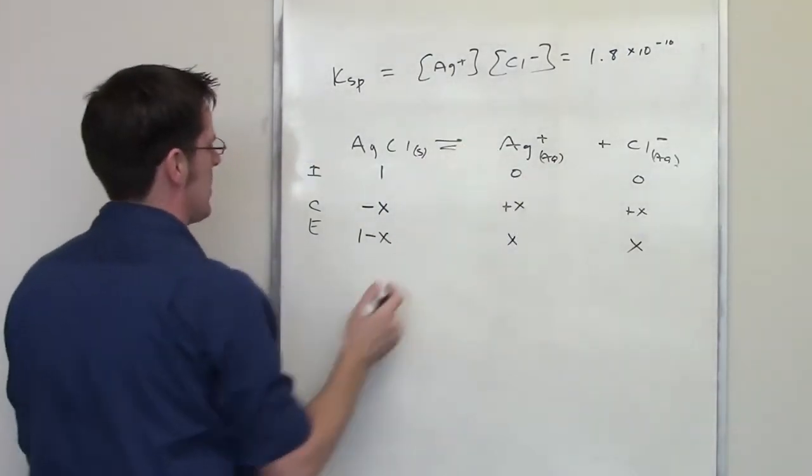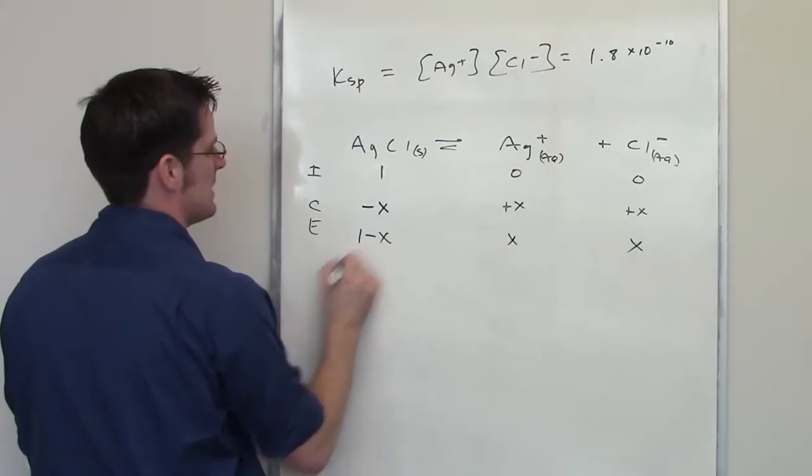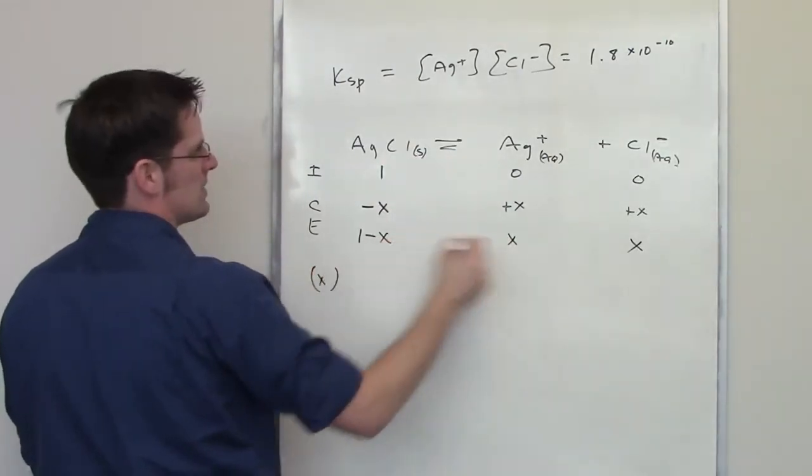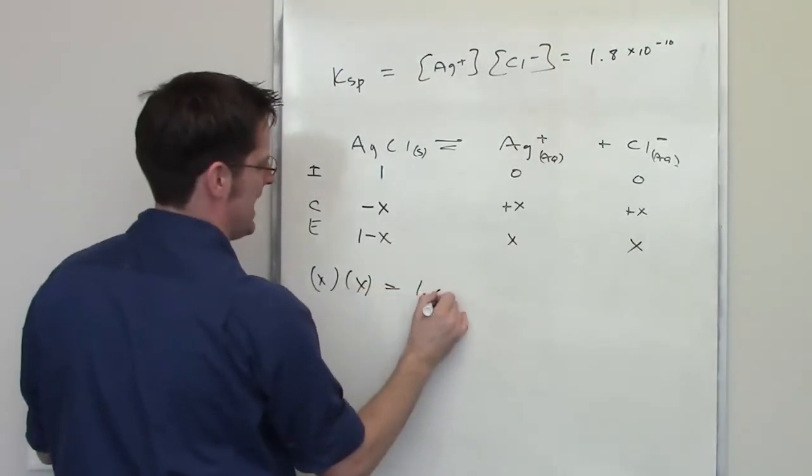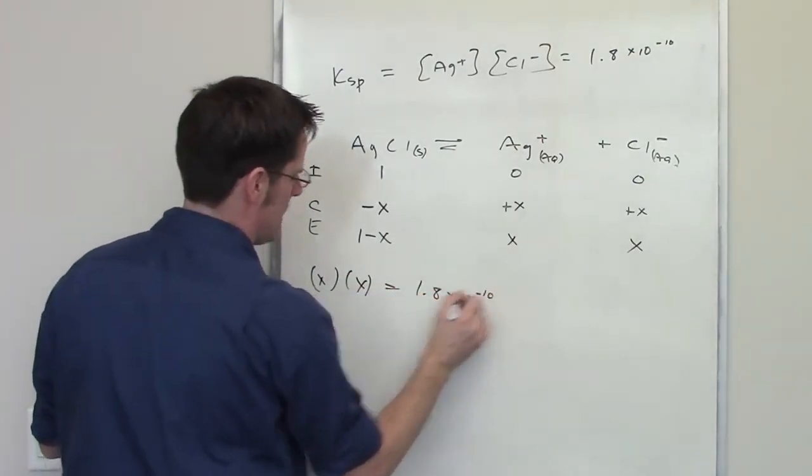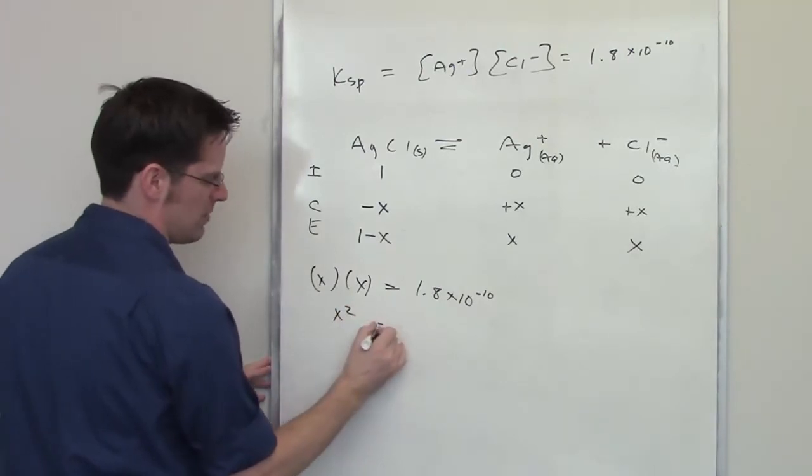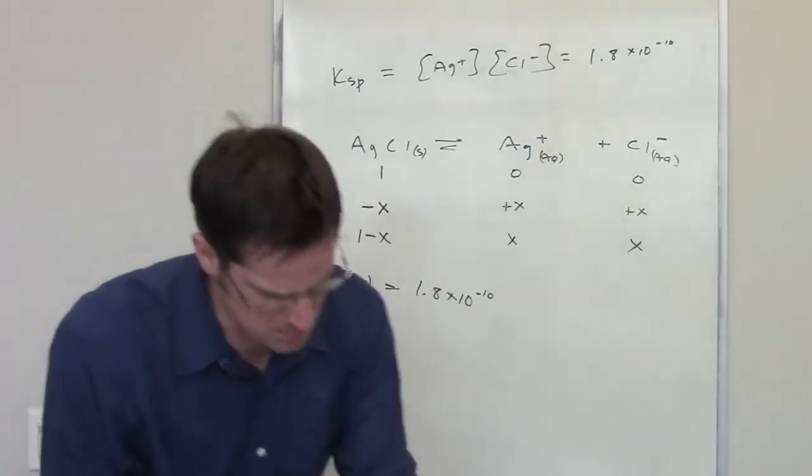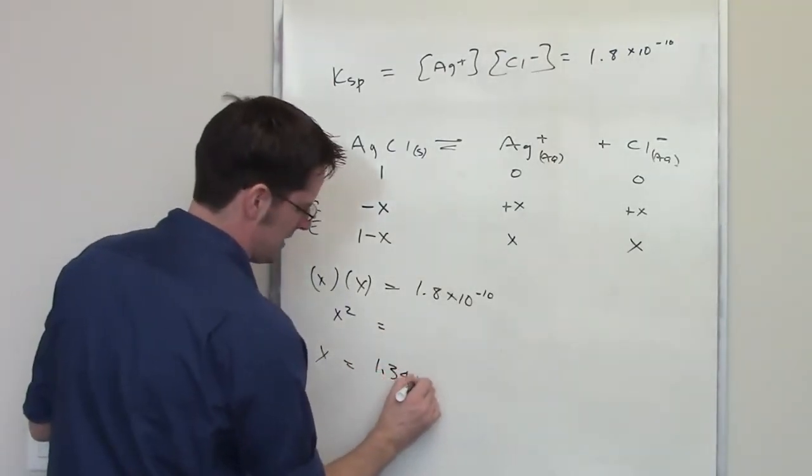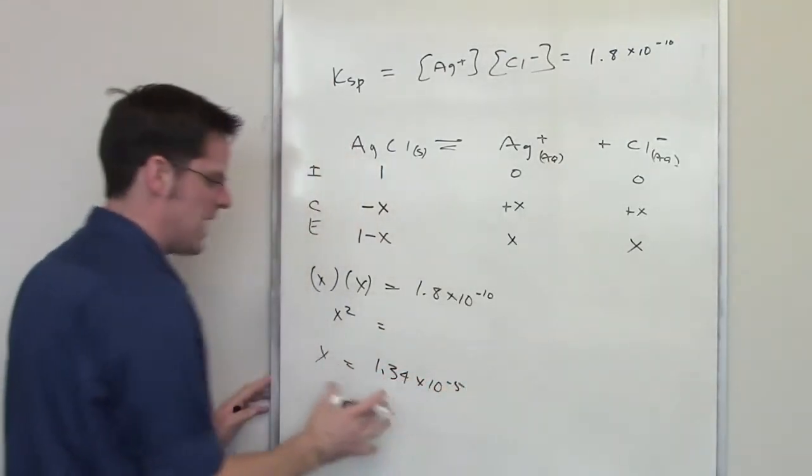So we're going to go ahead and throw this thing over here. I've got X for my silver concentration, X for my chloride concentration, setting that equal to 1.8 times 10 to the negative 10th. I've got of course X squared being equal to this number. I solve for X, and that final number ends up being 1.34 times 10 to the negative 5th.